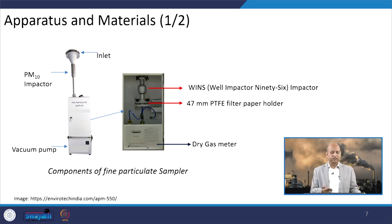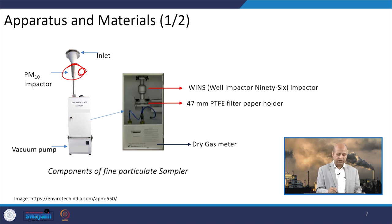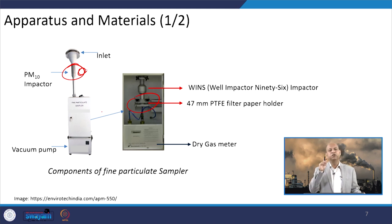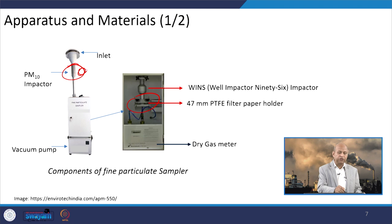This is the apparatus: there is an inlet, and then a PM 10 impactor so that coarse particles are removed and only PM 10 passes through. At a lower location, PM 2.5 is collected on a small filter paper. This means that PM 2.5 to PM 10 is collected in that particular portion.